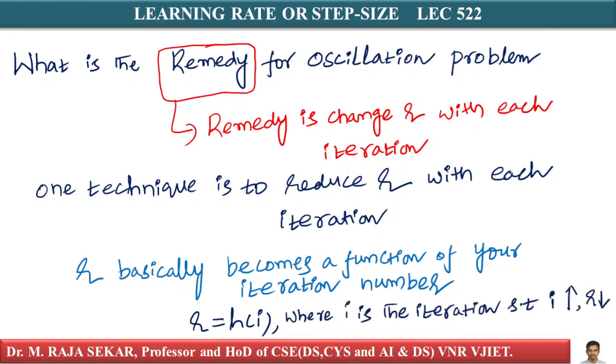In the literature, there are well-studied functions. But if you ensure that as the iteration number increases, if r reduces, eventually we will converge to the right solution, which is extremely important with learning rate or step size.